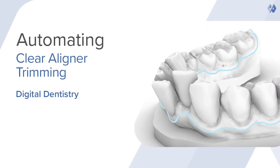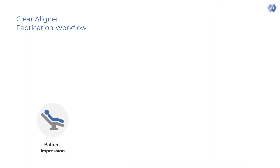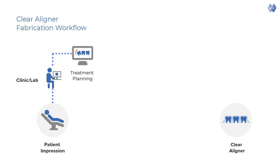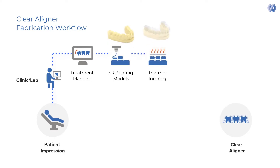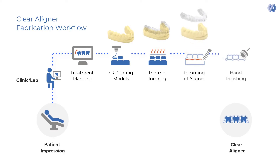Automating Clear Aligner Trimming. After the patient impression, there are several steps in the clear aligner fabrication process. Firstly, the orthodontic treatment is planned. The planning software outputs the various patient models which are then 3D printed. This is followed by thermoforming. The excess material is trimmed. If required, the aligners are then polished. The aligners are then ready for the patient.